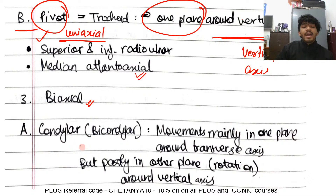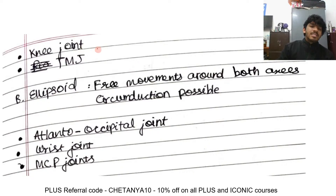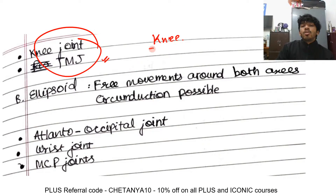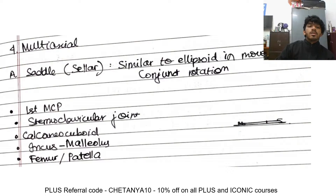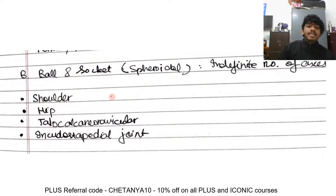Biaxial joints have two types. Condylar joints (bicondylar) move mainly in one plane around a transverse axis but also allow some rotation around the vertical axis — examples are the knee joint and temporomandibular joint. Note: the knee is biaxial/condylar, not a simple hinge joint. Ellipsoid joints — for example the atlanto-occipital joint, wrist joint, and metacarpophalangeal joints — allow movement around both axes and circumduction is possible.